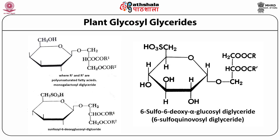Plants contain glycosyl glycerides. These are generally mono or digalactosyl derivatives of diglycerides. One of the diglycerides shown is a glycolipid found in chloroplasts. These glycosyl diglycerides of leaves are rich in linolenic acid, hence these green leaves are a good source of this PUFA. A sulfolipid found widely distributed in plant chloroplasts is a sulfonic acid derivative of 6-deoxyglucosyl diglyceride. Apart from plant chloroplasts, this glycolipid is also present in chromatophores of photosynthetic bacteria, indicating its importance in photosynthesis.